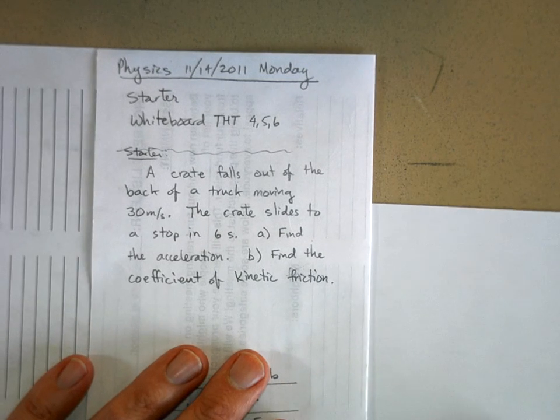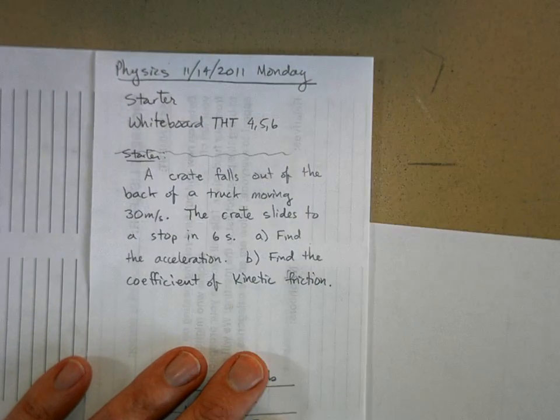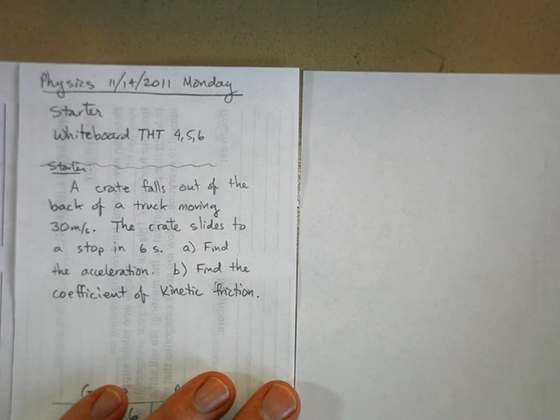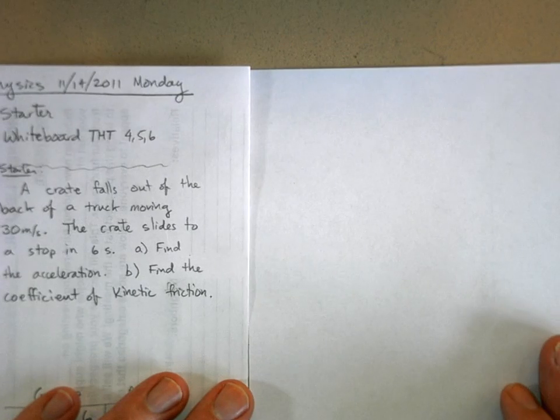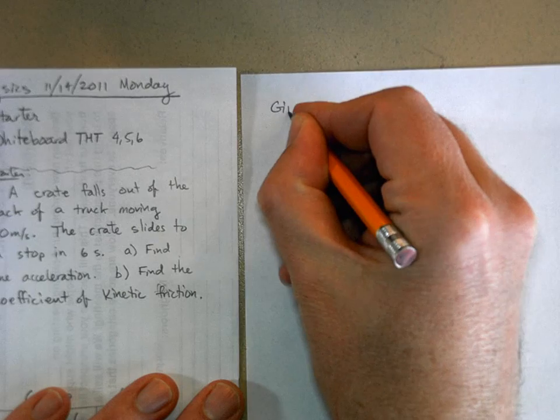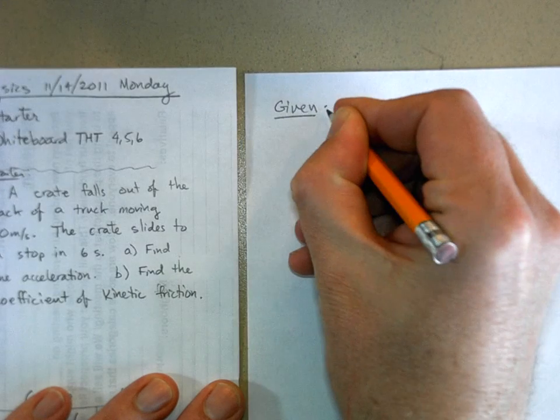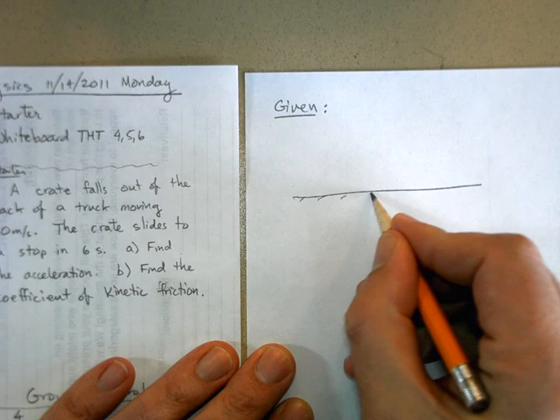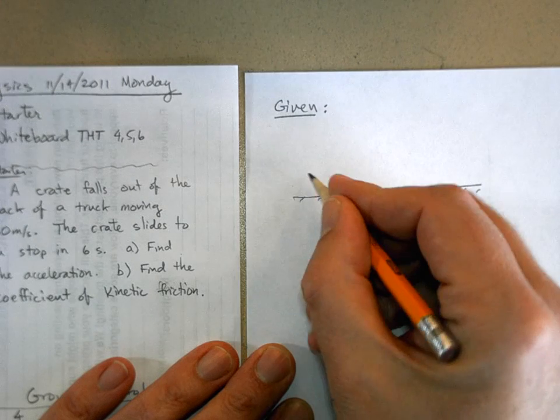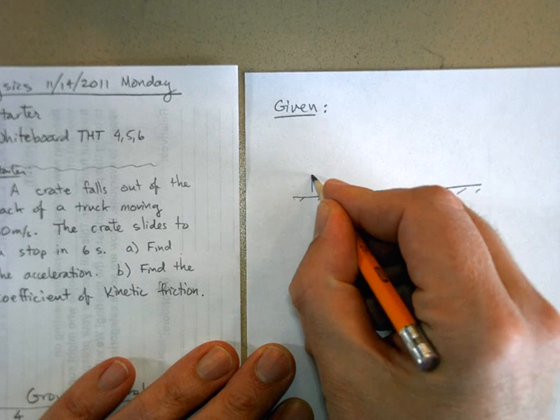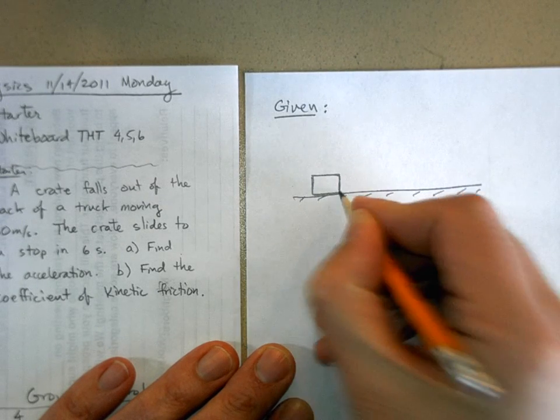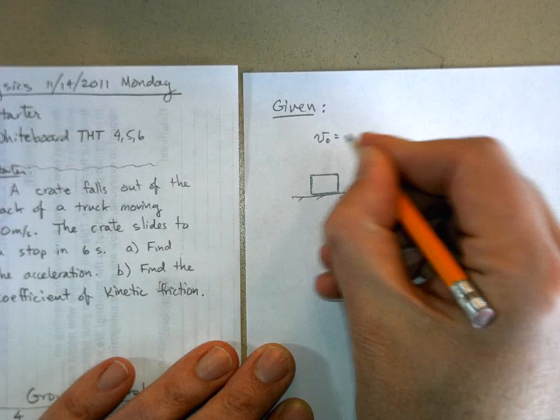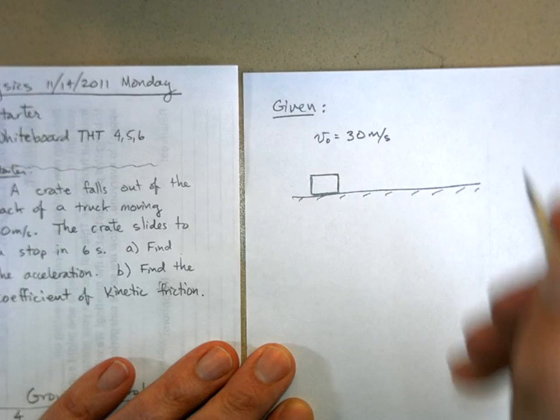So let's find the acceleration and let's find the coefficient of kinetic friction. Here we're assuming that we have a constant deceleration of that crate. Let's set it up with given, find, and solve—that's the first step of the procedure. I'm going to write given and draw a little sketch of the problem. It's a very simple sketch. Here's the road and here's the crate, and we're assuming it's a nice flat road.